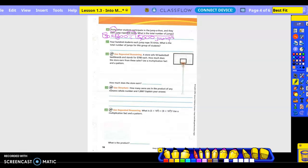Number 21. 400 students each jump rope 70 times. What is the total number of jumps for this group of students? So 400 times 70. What is the total number of jumps for this group? So what is my work?